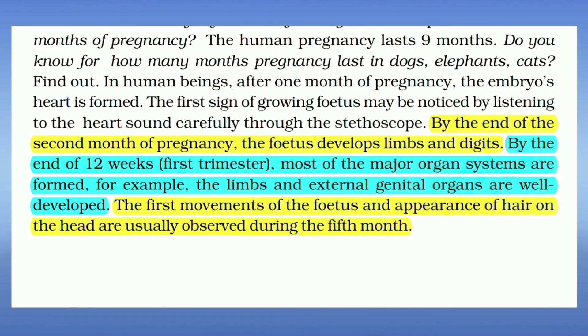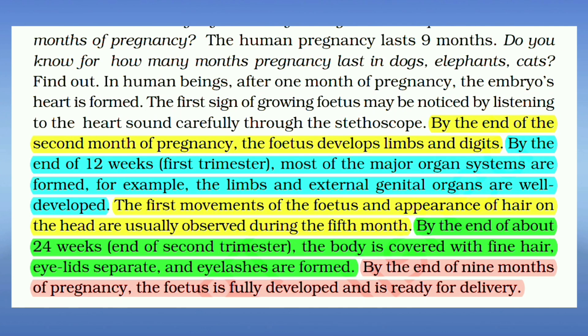The first movements of the foetus and appearance of hair on the head are usually observed during the fifth month. By the end of about 24 weeks — the end of the second trimester — the body is covered with fine hair, eyelids separate, and eyelashes are formed.